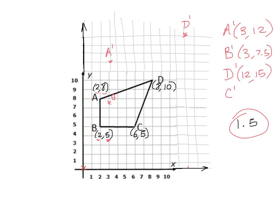And our C prime, or C is 6, and 1.5 times 6 is 9. Comma 1.5 times 5, we already know, is 7.5. So we have 9 with 7.5, which is right here. So our new image is here.